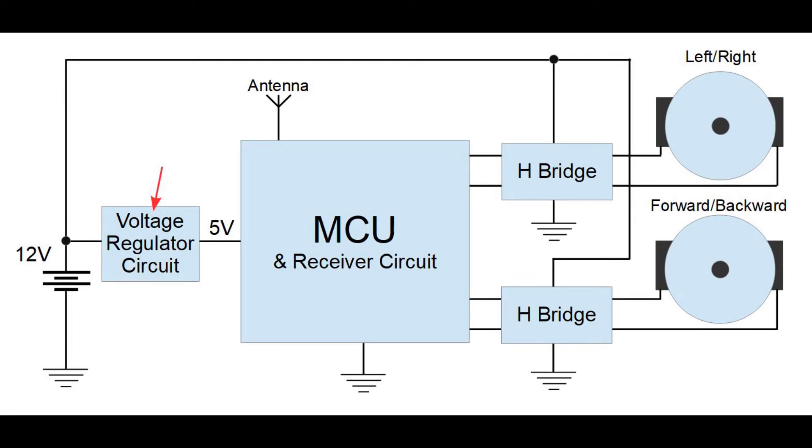The voltage regulator circuit is needed because 12 volts would damage the microcontroller unit, so we have to bring the voltage down to 5 volts. The current flow from the 12 volt voltage source through electric motors is controlled by the control signals that are coming from the microcontroller unit and that are controlling the H-bridges, as we discussed in the previous video.